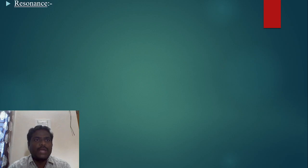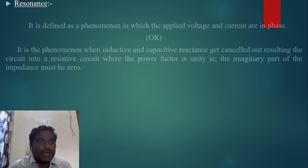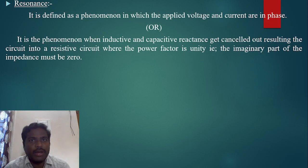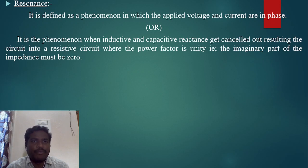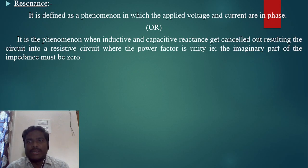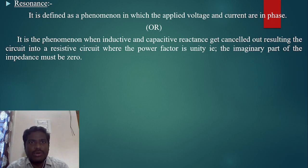First, what is meant by resonance? Resonance is a phenomenon in which the applied voltage and current are in phase — there is no phase difference between voltage and current. It is also defined as the phenomenon when inductive reactance equals capacitive reactance, so they cancel out, resulting in the circuit becoming a resistive circuit where the power factor is unity. In this condition, the circuit is purely resistive and the power factor angle between voltage and current is zero.